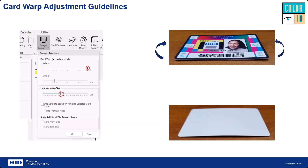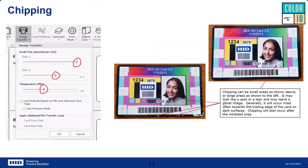It doesn't matter what image you print — card warp is completely related to transfer and the heat going into the card. The next field issue is chipping. Chipping is caused by either inadequate transfer temperature or heat to the cards, or potentially contaminated or dirty cards.